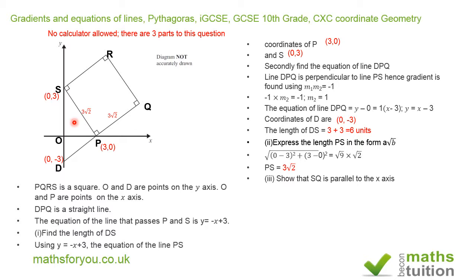For part 3, we need to show that SQ is parallel to the x-axis. SQ may not look parallel to the x-axis in the diagram, but bear in mind the diagram is not accurately drawn. Looking again at triangle SOP, because it is a right-angle isosceles triangle, we know the right angle is 90°.